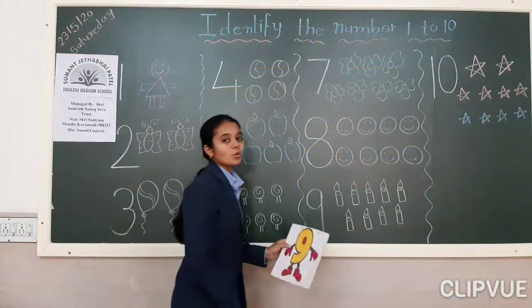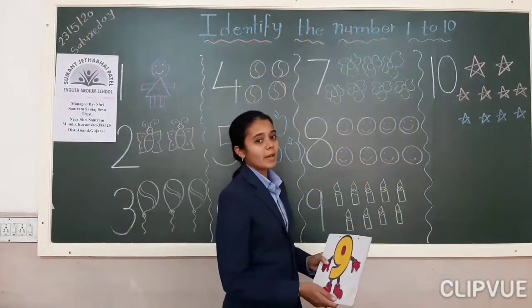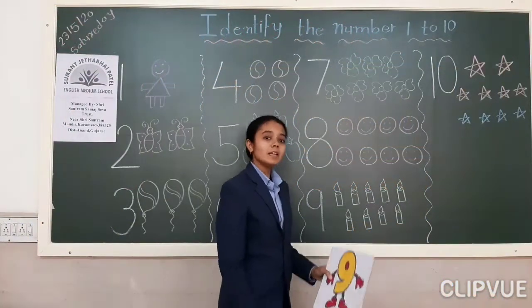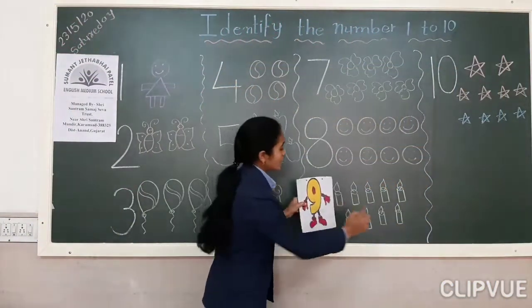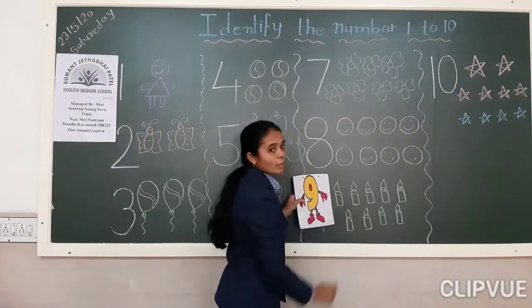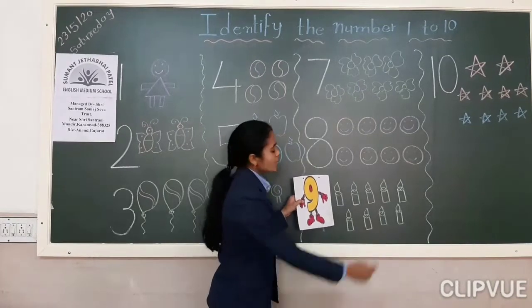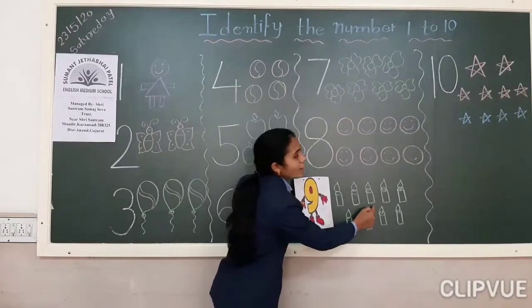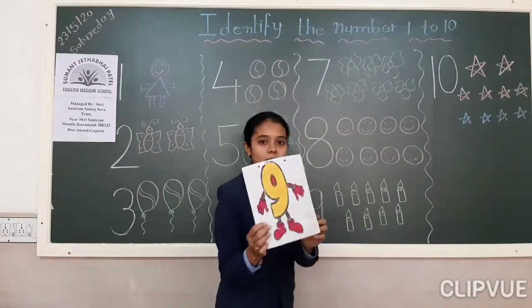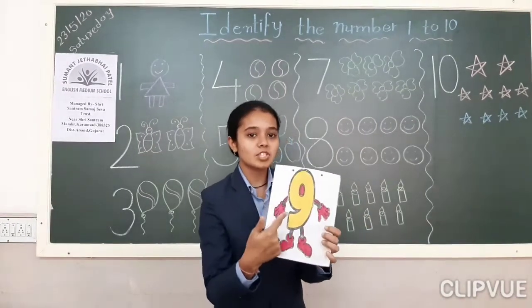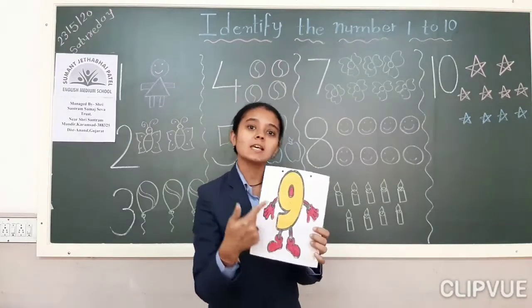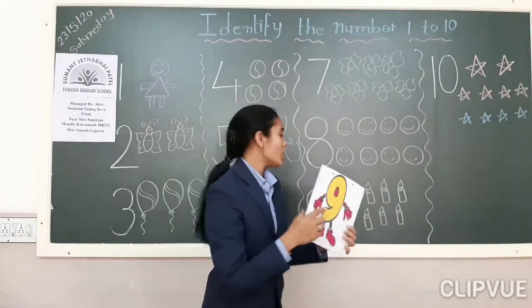She went home and had a dinner with 9 candles. How many candles? 9 candles. And which number is this? 9 number.